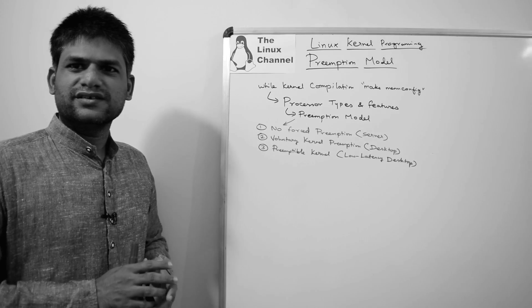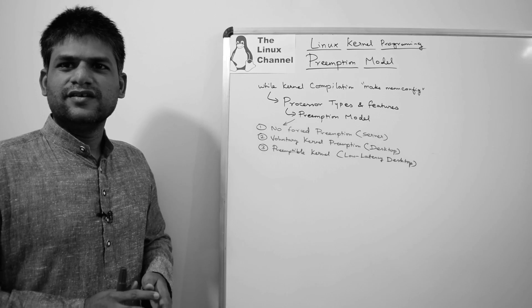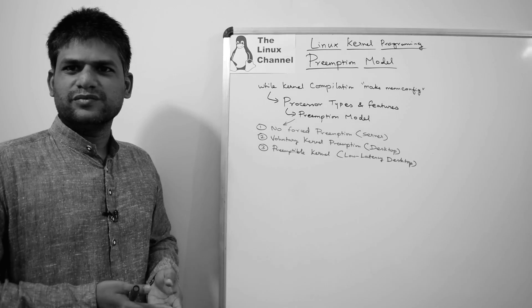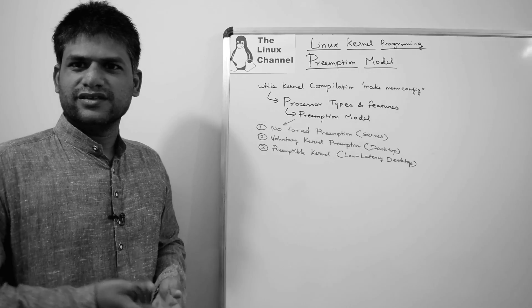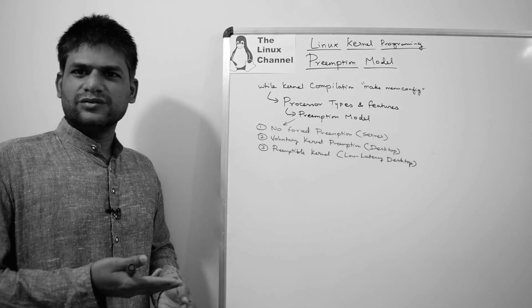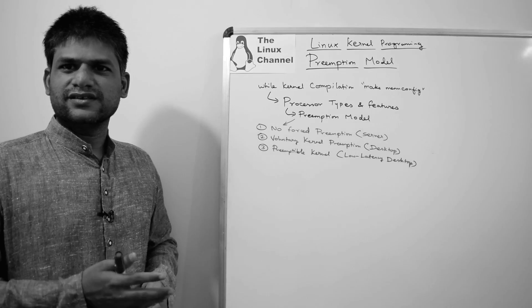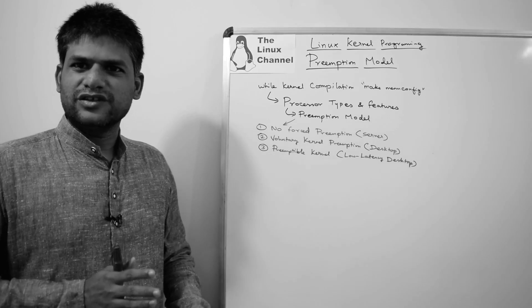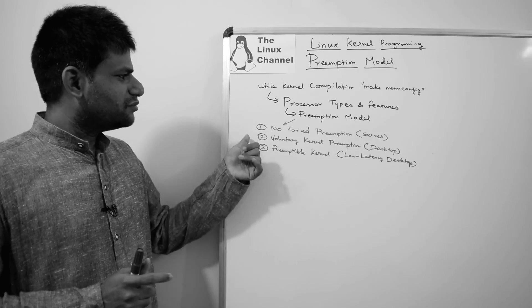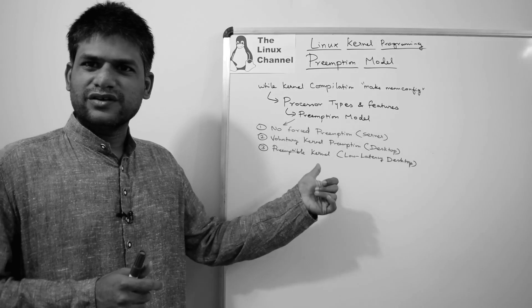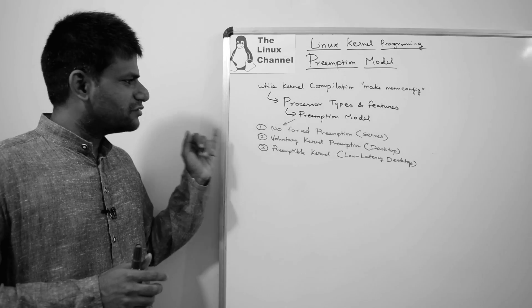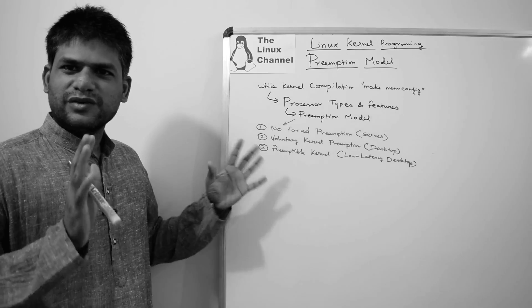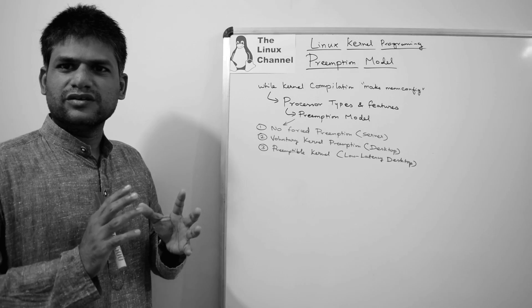Before going in-depth, let me briefly discuss the history of the preemption model in the Linux kernel. Before the 2.4 kernel version, preemption was kind of supported in user space or processes, but not much in kernel space. Through 2.6 and later versions the preemption model was introduced, initially immature, then made mature. This is the reason people were quite afraid to choose a preemption model at all. Simply put: option one is almost no preemption, option two is a medium level, and option three is a hyper level of preemption.